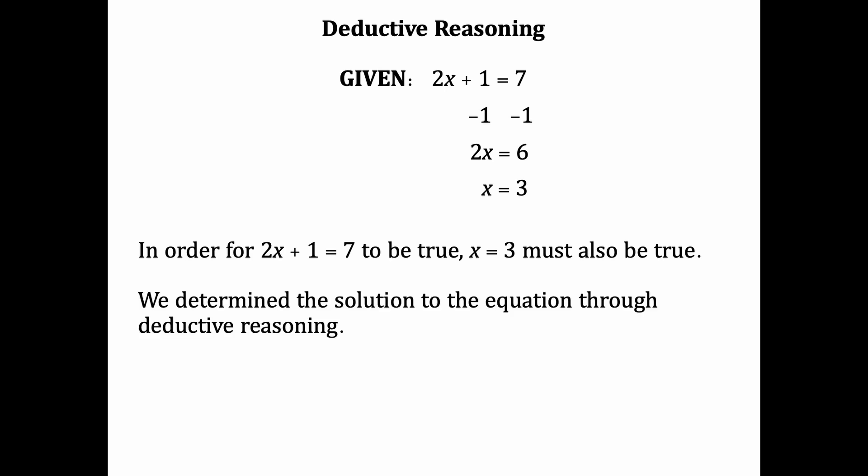Deductive reasoning is what all of mathematics is based upon. You start with some given equation, do some algebra on it, and arrive at a specific conclusion which is 100% guaranteed to be right. In order for 2x plus 1 equals 7 to be true, x has to be 3. There's no other way it could be. And that's one way to tell that you've actually used deductive reasoning. It's when our conclusions are 100% certain and there's no other way it could be.